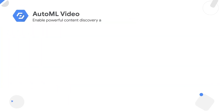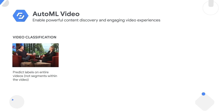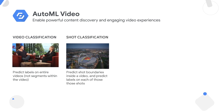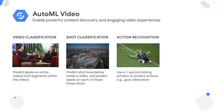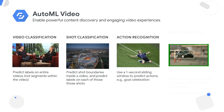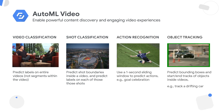With AutoML you can build custom models for video classification based on your business needs. You can identify actions and objects within video feeds and use this inference to initiate measures around business safety, security, and quality assurance.